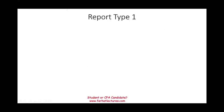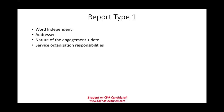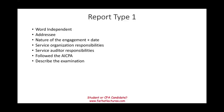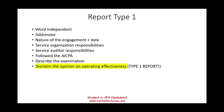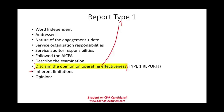Now let's discuss what a type 1 report looks like. The title would say 'independent' and include an addressee, the nature of the engagement, and the date. It covers the service organization's responsibilities and the service auditor's responsibilities, following AICPA standards. They describe the examination and disclaim an opinion on the operating effectiveness — because in a type 1 report, you don't test the operating effectiveness. They also discuss inherent limitations (no internal control is perfect) and provide an opinion on the description and suitability of the design. Finally, they restrict the distribution.